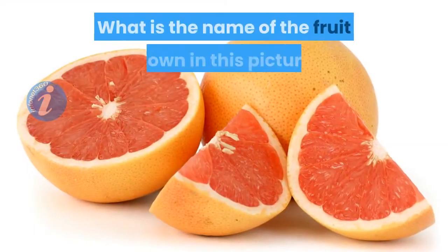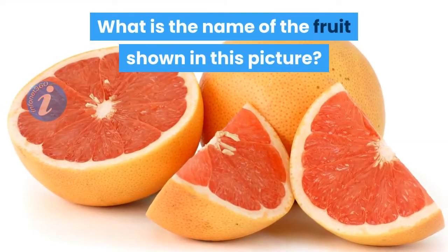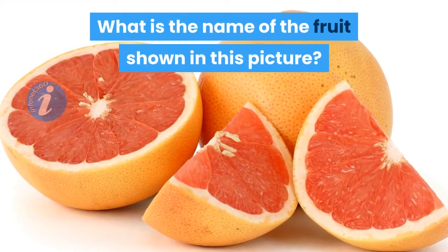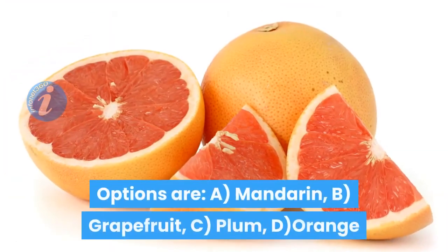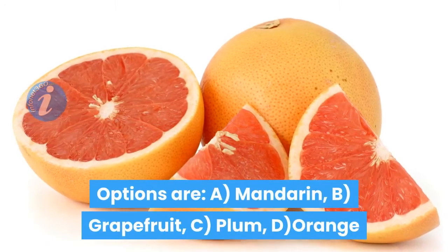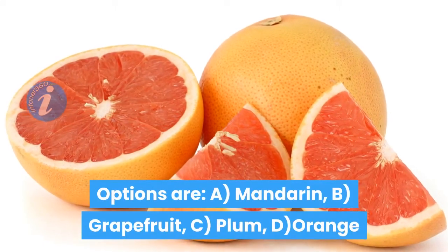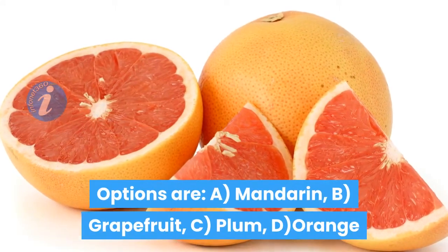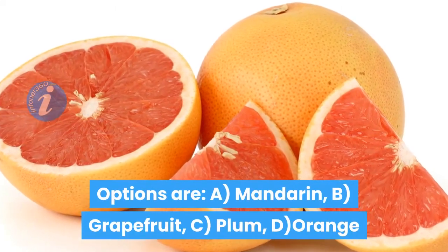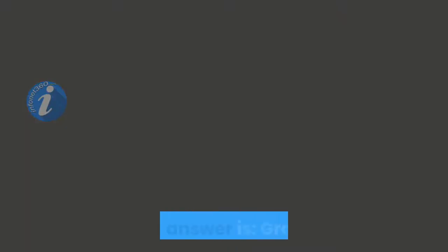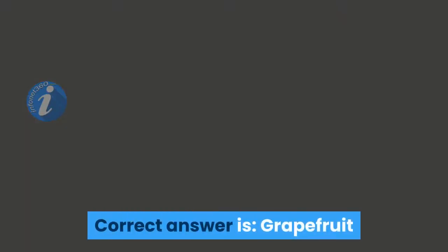What is the name of the fruit shown in this picture? Options are: A. Mandarin, B. Grapefruit, C. Plum, D. Orange. Correct answer is Grapefruit.